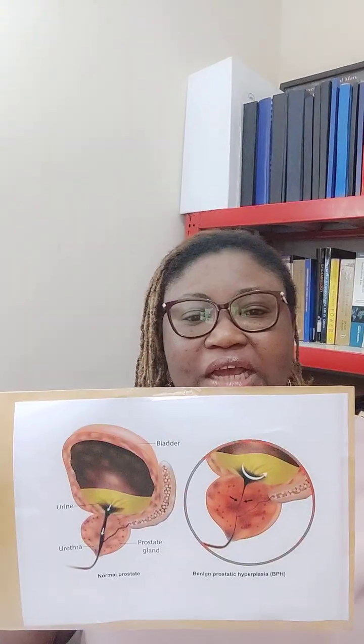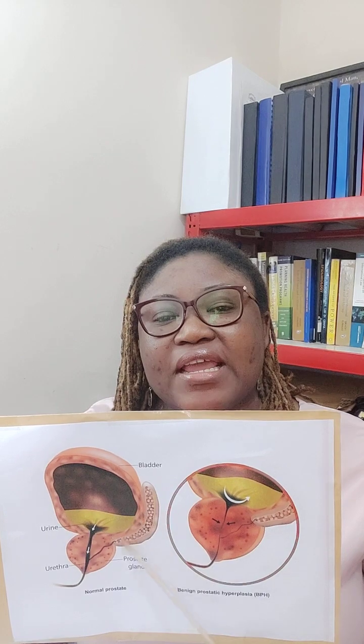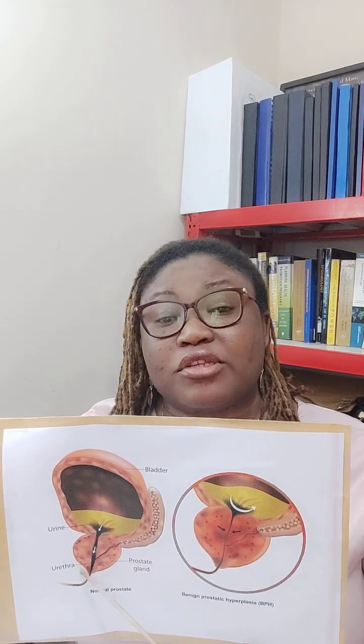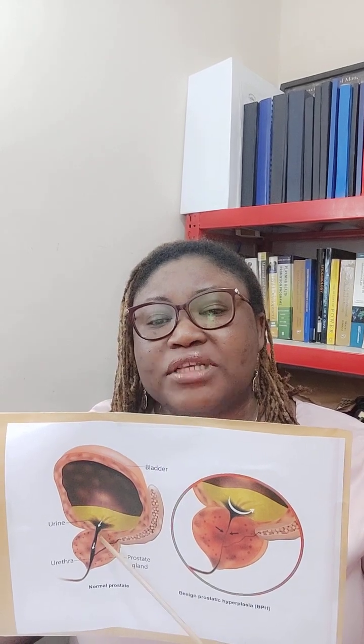Now, as the prostate gland grows bigger and enlarges, let's look at this picture. This picture is showing us the urinary bladder, one of the seminal vesicles, and the round structure here is the prostate gland. This picture is showing us the normal prostate gland. The black line you can see is the urethra — the tube that drains urine from the bladder through the penis to the outside. Men urinate through the urethra.